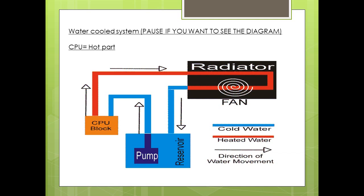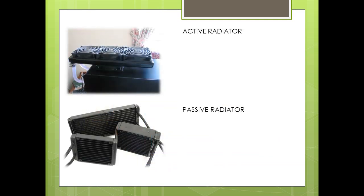So remember we put the coolant into the reservoir? The liquid then moves into the pump. The pump is required because the heat gathered from the PC components is concentrated on one part of the liquid. The heated liquid needs to be moved to the radiator. There are two types of radiator: passive and active. Both aim to get rid of the heat gathered in the coolant, but they both work differently.